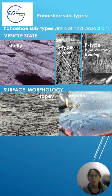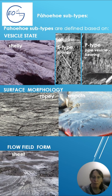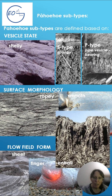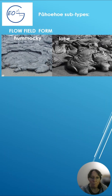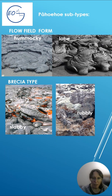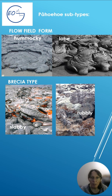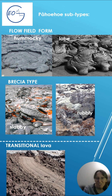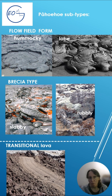Based on flow field, we can identify sheet, finger, entrail, hummocky, or lobe structure. Based on breccia type, slabby and rubbly subtypes are distinguished. There is also transitional lava that typically involves Pahoehoe converting into Aa, though the reverse is possible but rare.